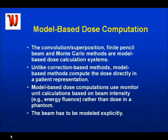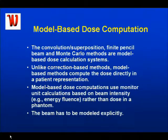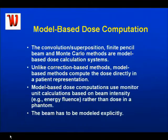The heterogeneity corrections they produced weren't that accurate, especially if you had both contour corrections, field modifiers, and serious heterogeneity issues. So really from the 90s, we started having what are called model-based dose calculations. Rather than starting from a measured dose distribution, you still need that measured water phantom data in order to characterize the models — you're creating models rather than using the actual dose distributions themselves.